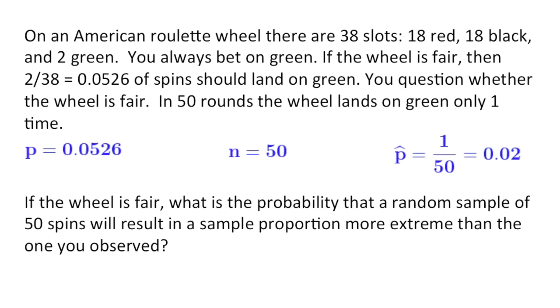Here's our question. If the wheel is fair, what is the probability that a random sample of 50 spins will result in a sample proportion more extreme than the one you observed? In other words, if P equals 0.0526, what probability of samples of N equals 50 would have a sample proportion more extreme than the one we observed here, which was 0.02?